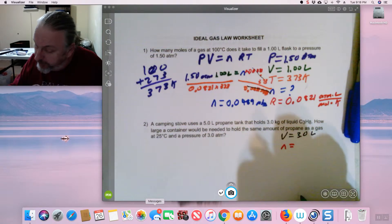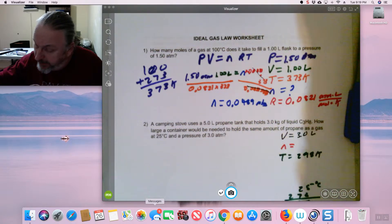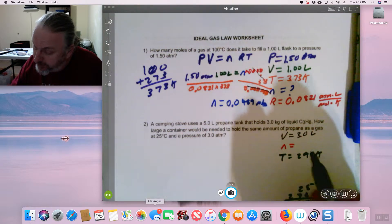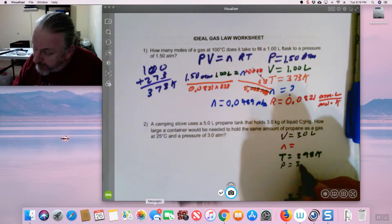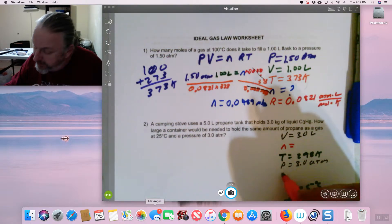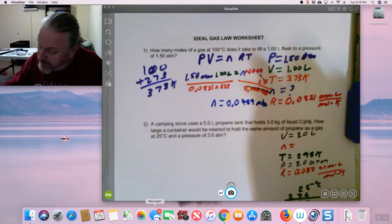How large can everyone need to hold the same amount of propane as a gas? At 25 degrees C, again, what do we do? 25, 273. That would be 298. T equal to 298. And a pressure of 3 atmosphere. So that means my R value will be the same as we used above, 0.0821 atmospheres times liters per mole.